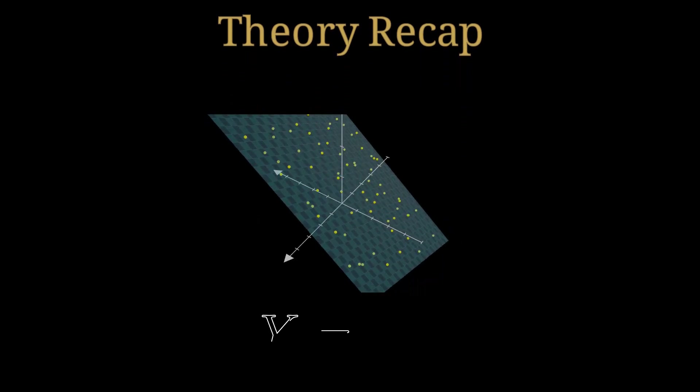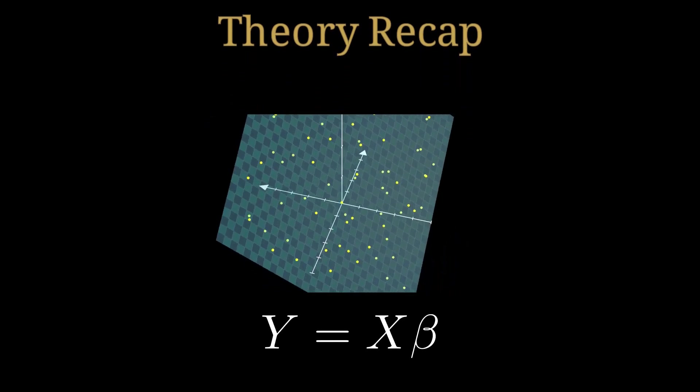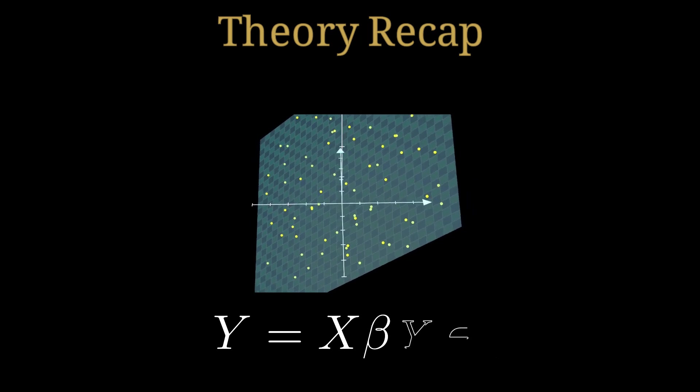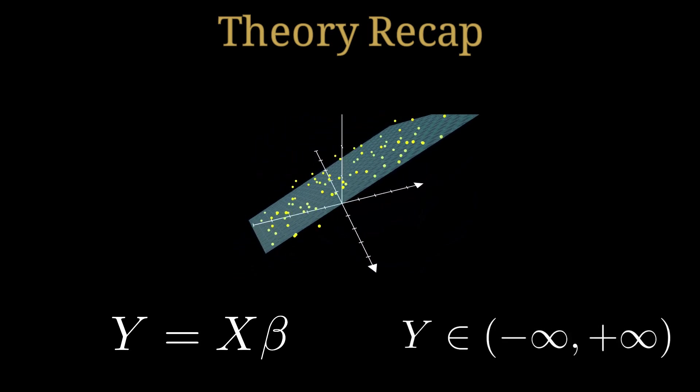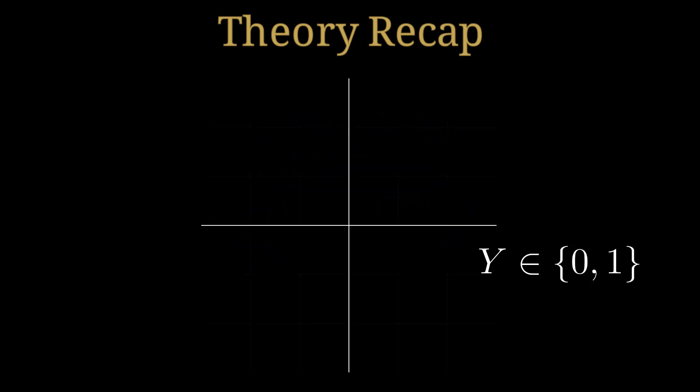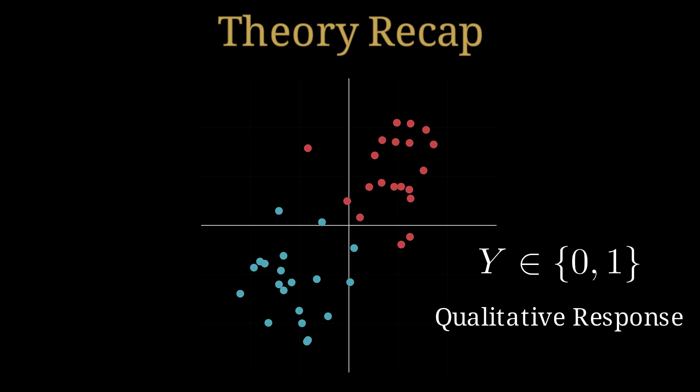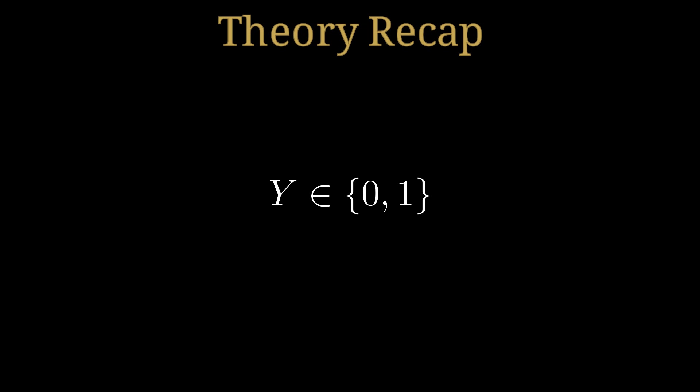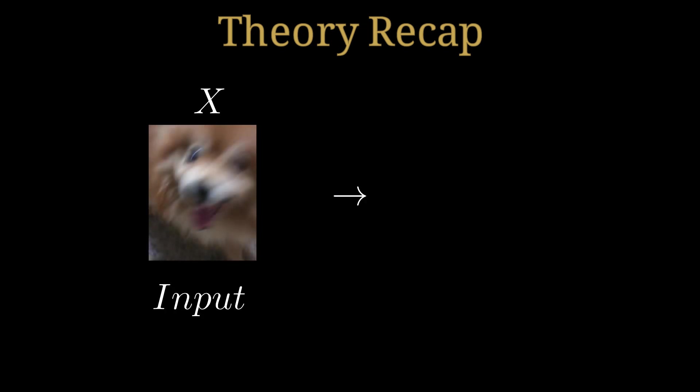Let's start with a quick theory recap. Recall from linear regression we have this linear equation where the response Y is quantitative, so it can take any value. This is a problem when we want to classify data into classes, since our response needs to be a probability which is between 0 and 1.